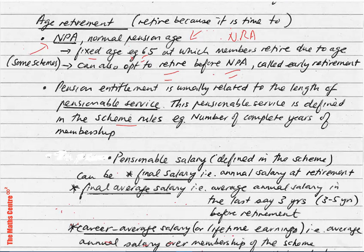Next, let's talk about pension entitlement — how much are you entitled to get per annum when you retire? Pension entitlement is related to the length of pensionable service. This pensionable service is defined in the scheme rules; it may be, for example, the number of complete years of membership in the scheme.